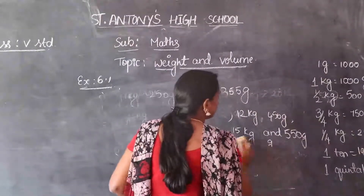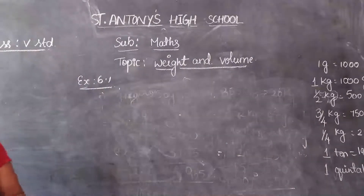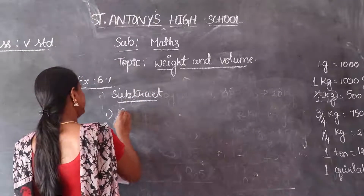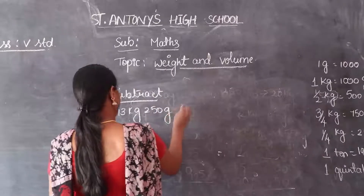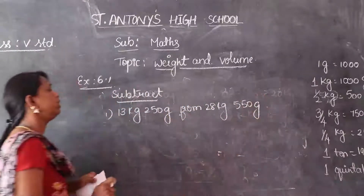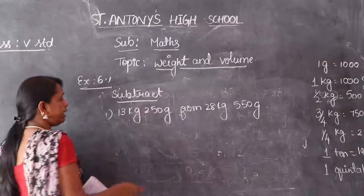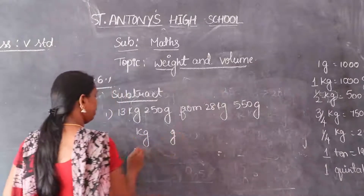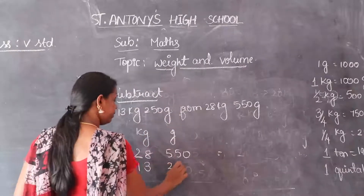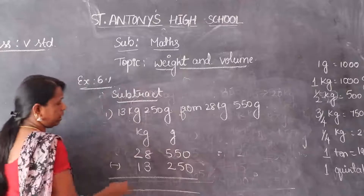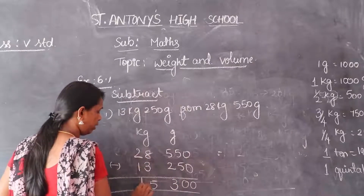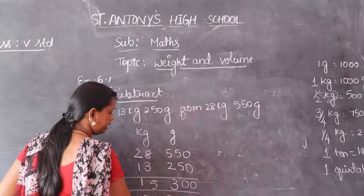Subtraction. First one: subtract 13 kg 250 grams from 28 kg 550 grams. The bigger number should be written in the minuend place — that is 28 kg 550 grams minus 13 kg 250 grams. 0 minus 0 is 0, 5 minus 5 is 0, 5 minus 2 is 3, 8 minus 3 is 5, 2 minus 1 is 1. Answer is 15 kg 300 grams.